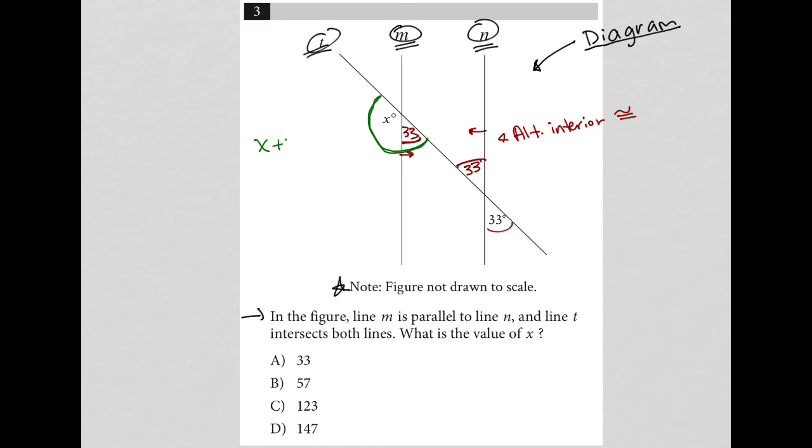which means that X plus 33 must equal 180 degrees. And when I subtract 33 from both sides here, I'm left with X equals 147. And therefore, my correct answer here is choice D.